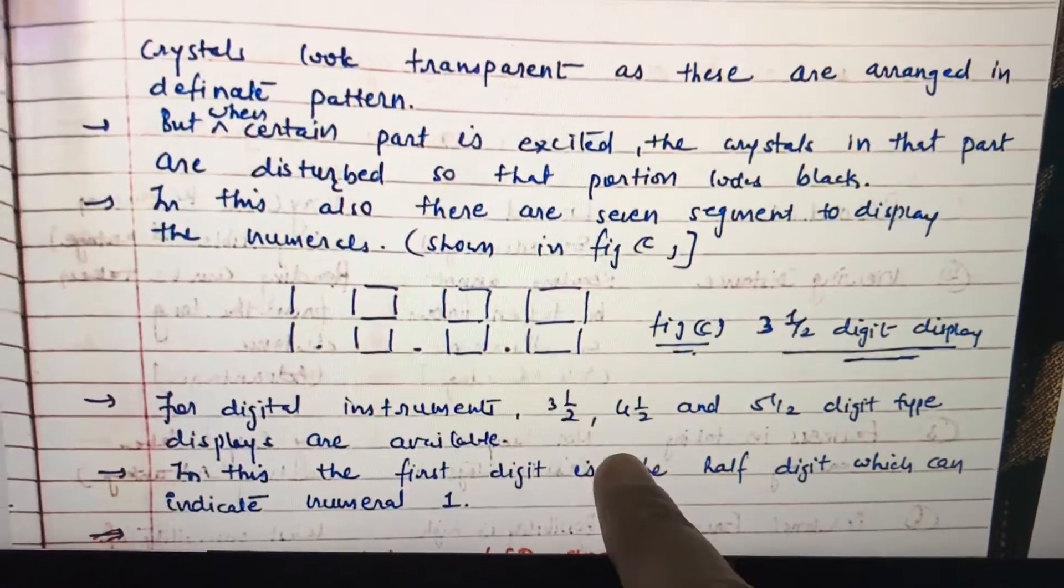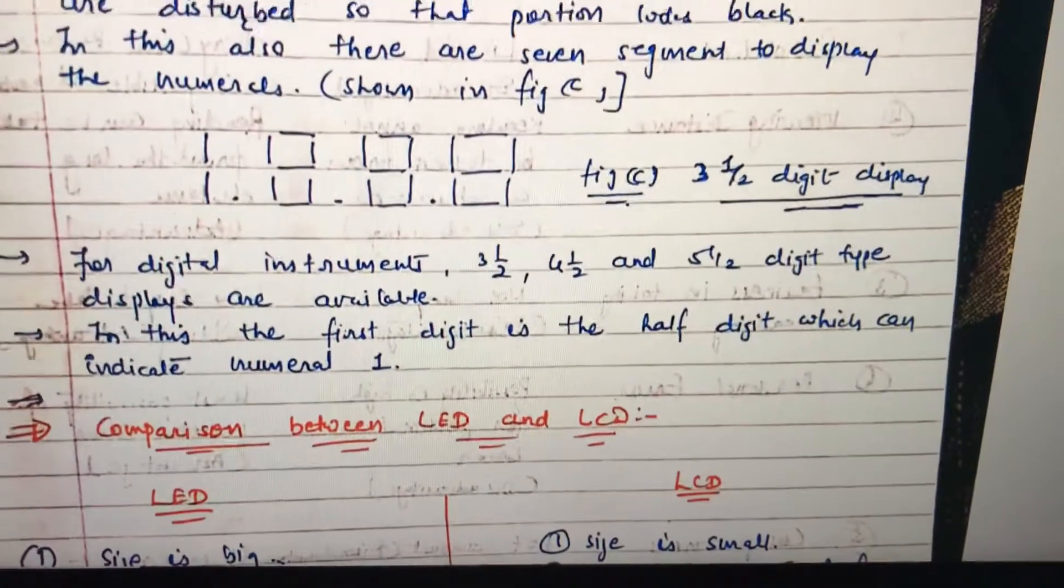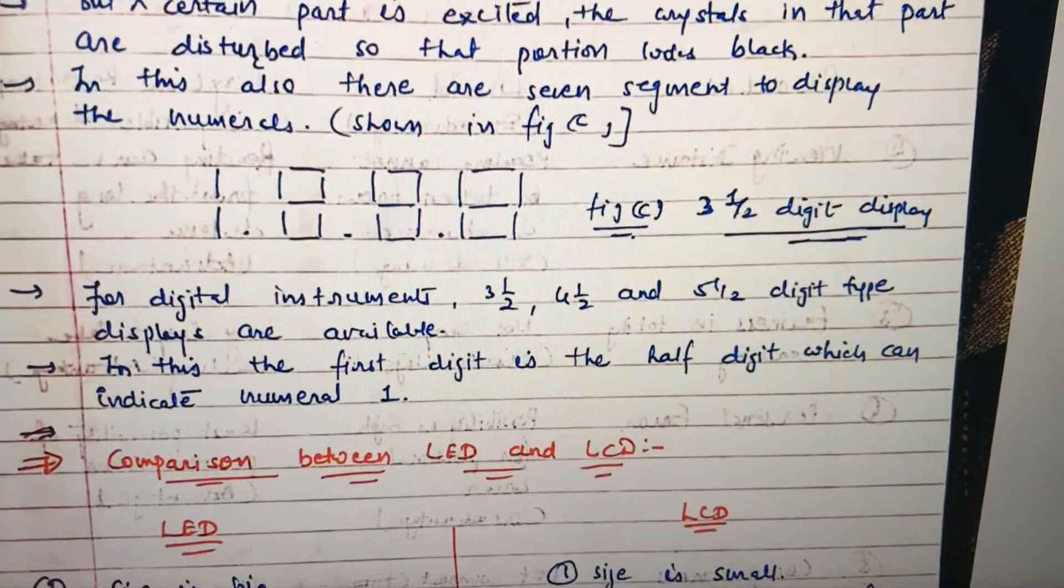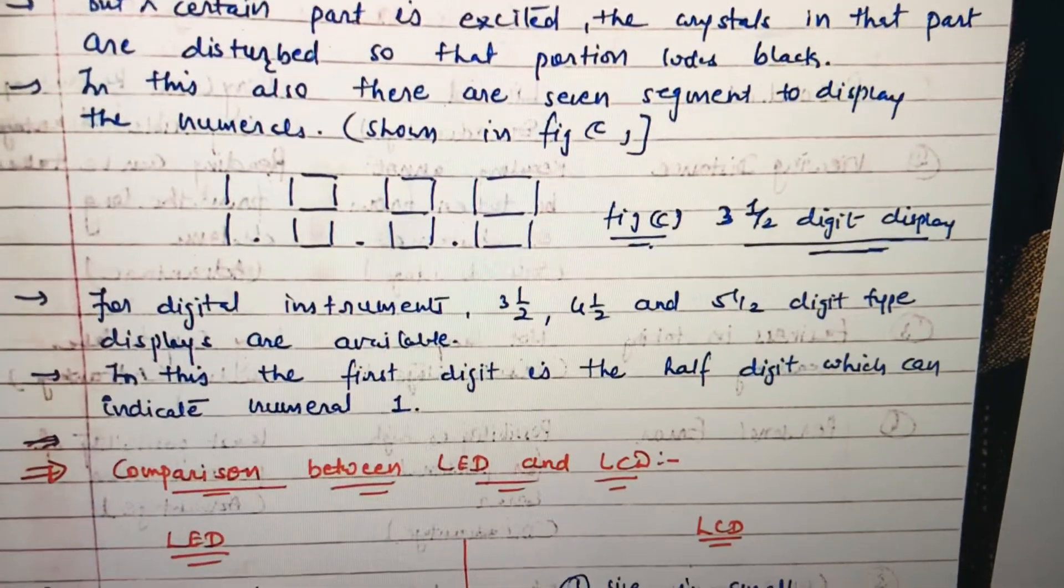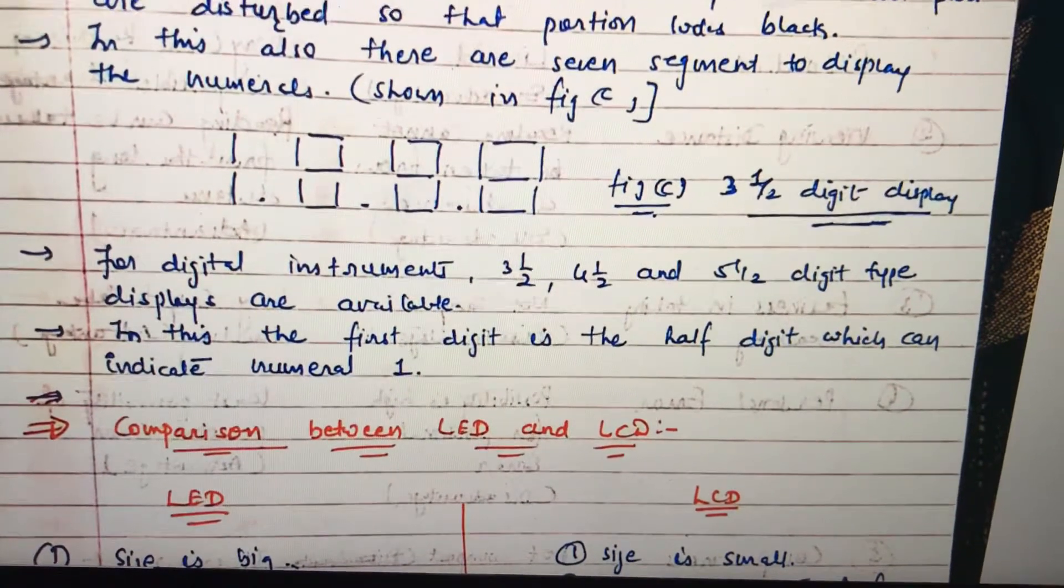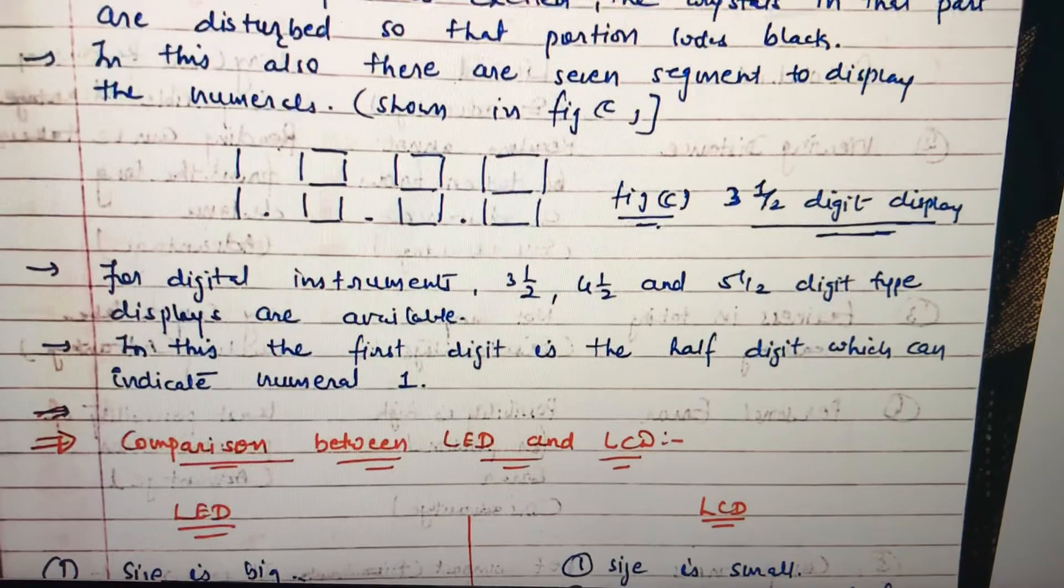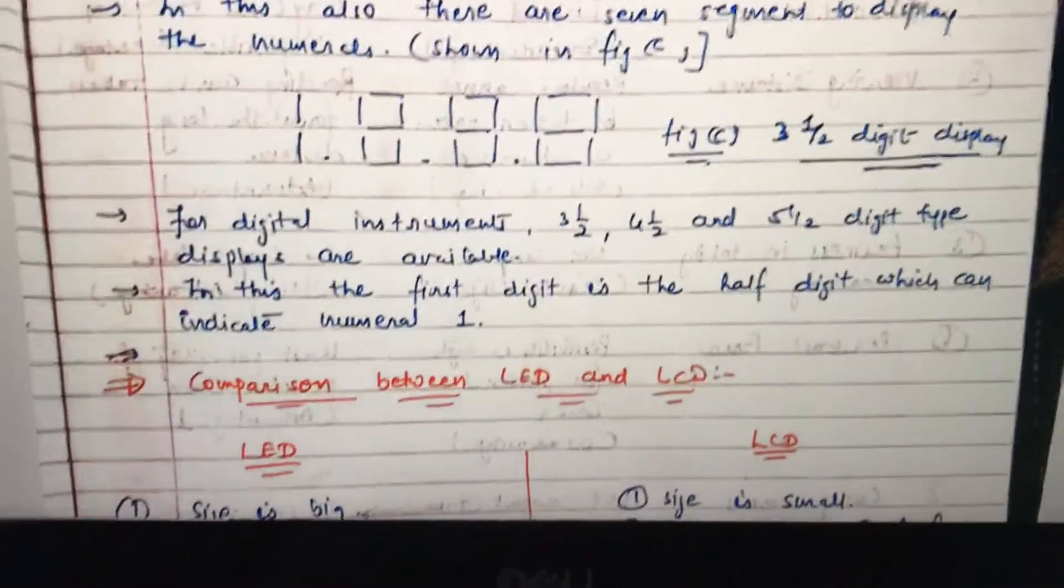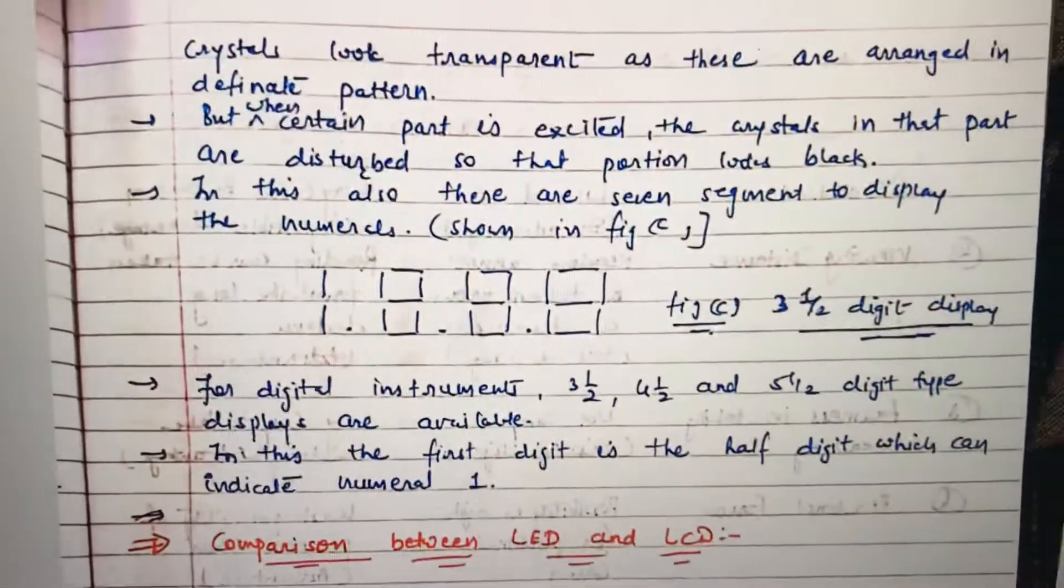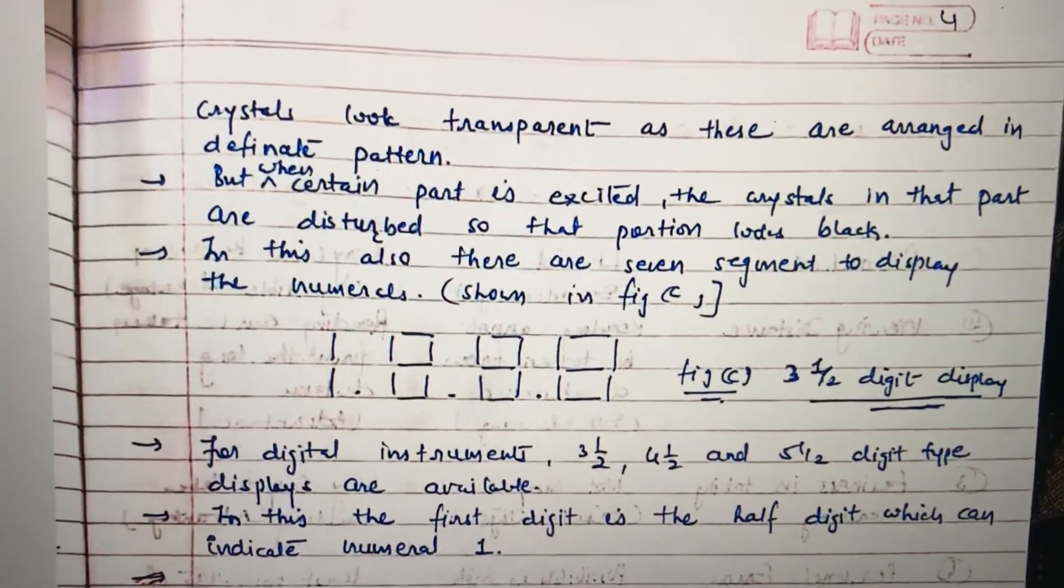It will look like this - this is the half digit and these three are full digits, so it is known as three and a half digit. In digital instruments we can use three and a half, four and a half, five and a half digit types of displays. In this, the first digit is the half digit which can indicate numeral one. So it is just used for the one. By this way, LED display can work.